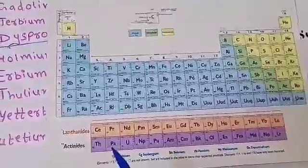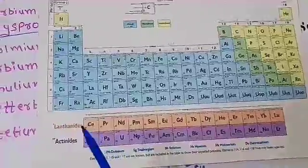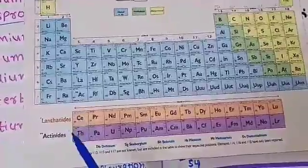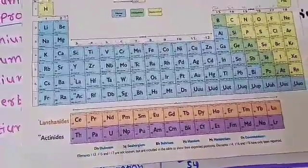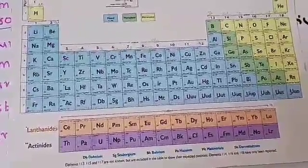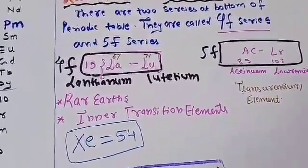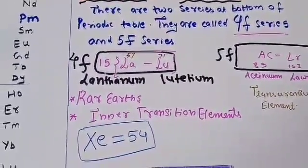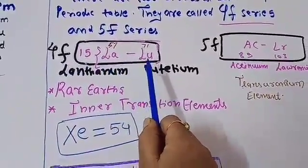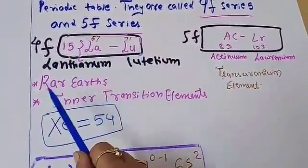Below the S, P, D blocks you can find two clear rows at the bottom of this periodic table. They are called our 4F and 5F series. As the last electron enters the 4F and 5F subshells, these series are collectively known as our F block elements. The 4F series starts from lanthanum to lutetium — 15 elements — and they are also termed as the rare earth elements.